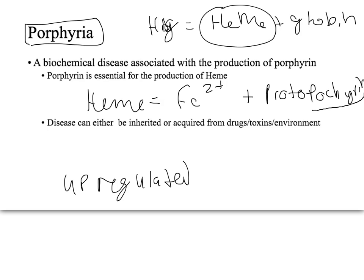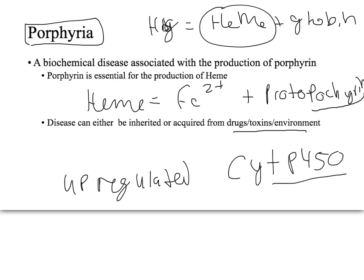Drugs, toxins, and environmental causes can also be behind porphyria, because cytochrome P450 actually uses porphyrin in the liver as part of its makeup, and so this is the major enzyme used to detoxify drugs, toxins, and other environmental things.